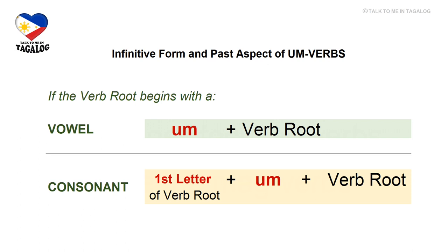Here are the two simple rules on how to form the infinitive and past aspect of UM verbs. Rule one: if the verb root starts with a vowel, simply put UM before the verb root — UM plus verb root. Rule two: if the verb root starts with a consonant, insert UM after the first letter of the verb root — first letter plus UM plus the rest of the verb root. These two rules apply to both the infinitive form and the past aspect of UM verbs.